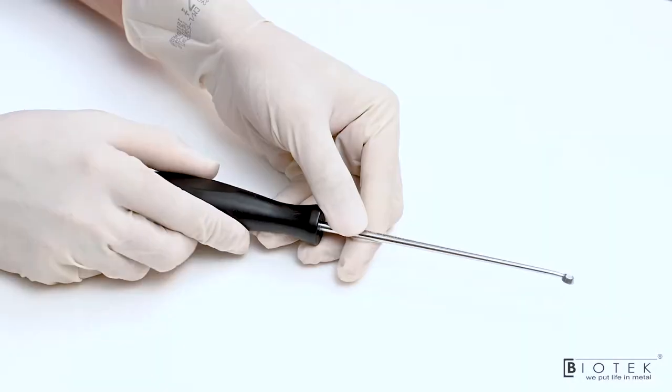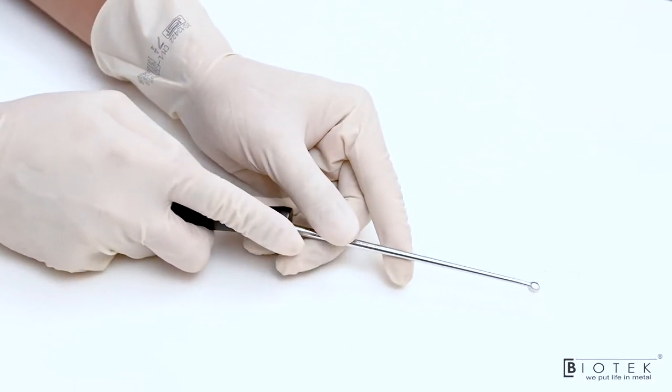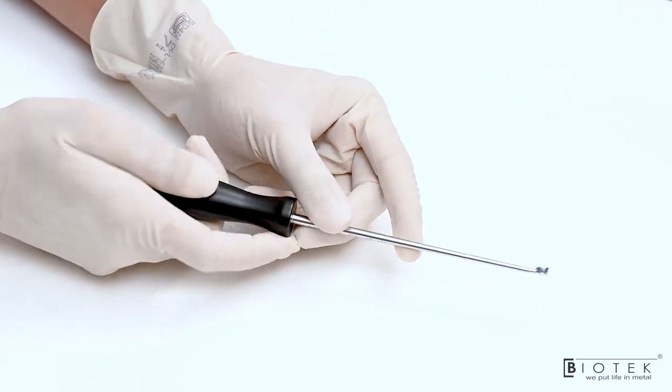This is known as Ring Curette which has a sharp tip to create bleeding bed over the labrum in the greater tuberosity footprint area.